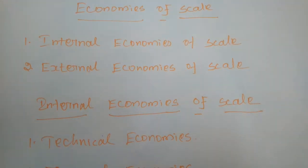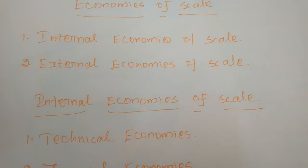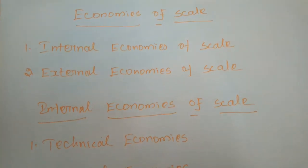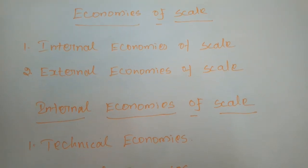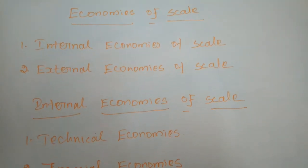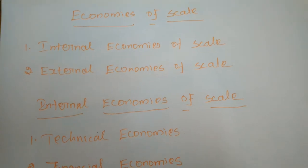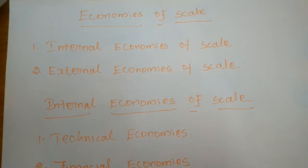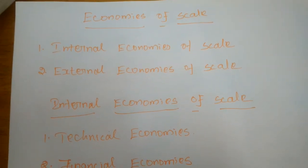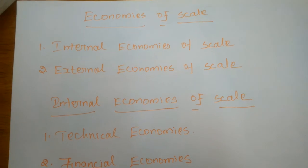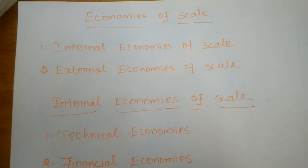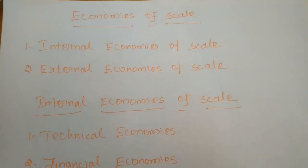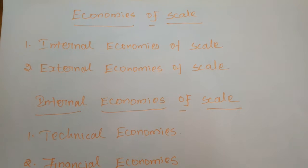The scale of production is an important factor affecting the cost of production. Producers always want to produce commodities at a low cost, but low cost always depends upon the availability of factors of production. If more factors are available, cost may be very low; if factors are unavailable, the cost of production will increase. Every producer wishes to reduce costs and hence uses the advantages of economies of scale.